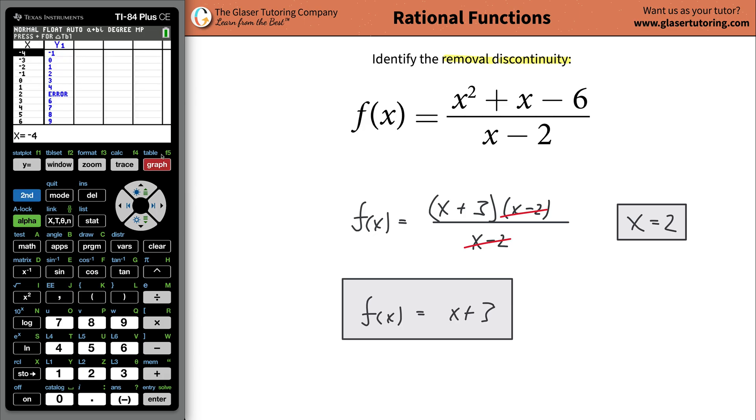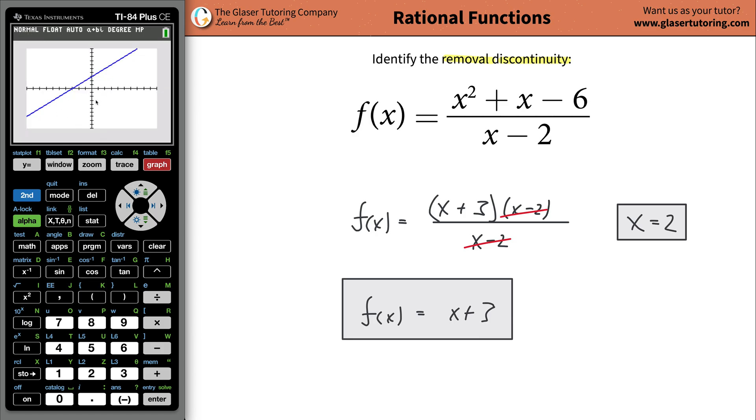Watch. Hit second graph to bring up your table and look at number 2. When x is 2, that's what we were saying before. Look, x is 2. There's an error. An error. So it is discontinuous at that point. Even though you're not going to see it when you hit the graph, you don't see that.